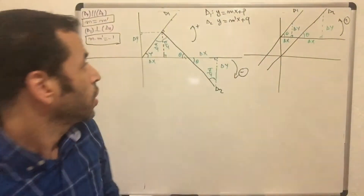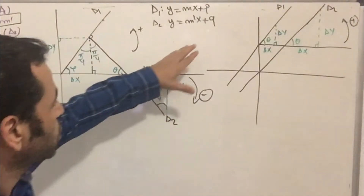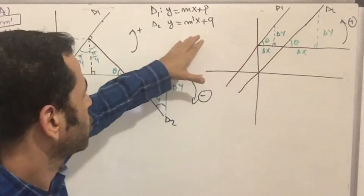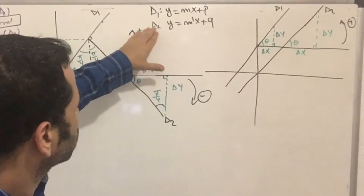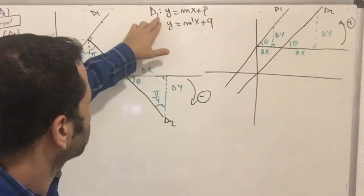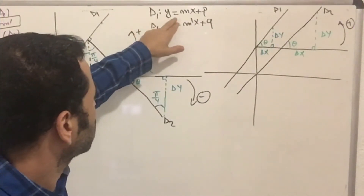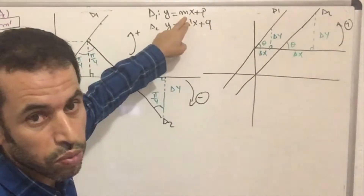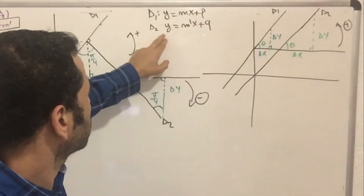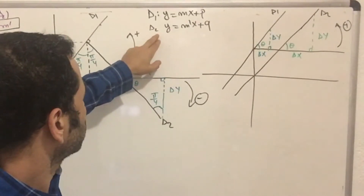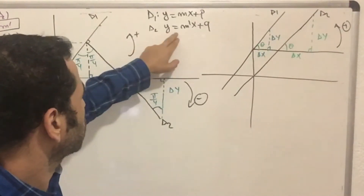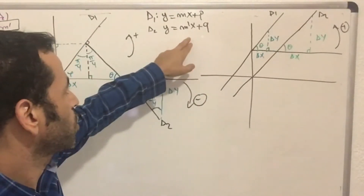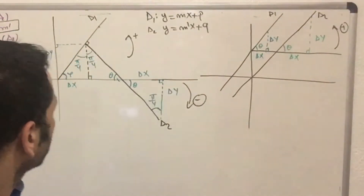Good morning. To determine the studies of both equation lines: the first equation line delta one is noted as y equal to mx plus p, where m is the slope. The second line, delta two, is y equal to m prime x plus q, where m prime is the slope as well.